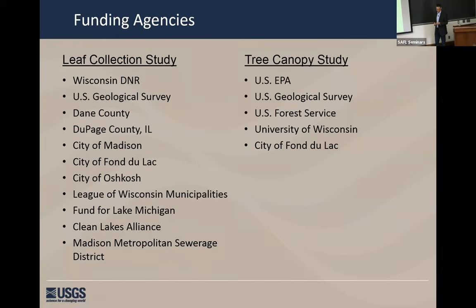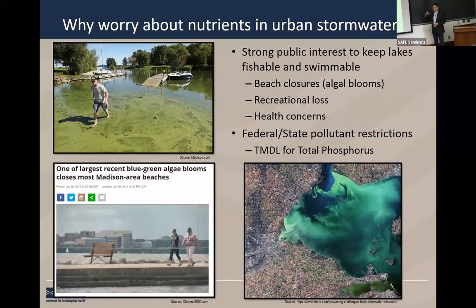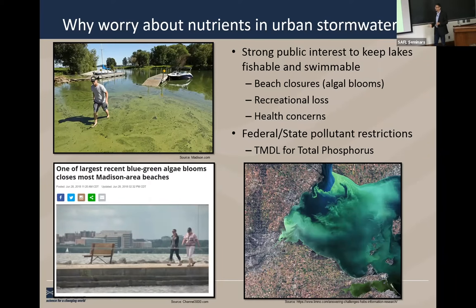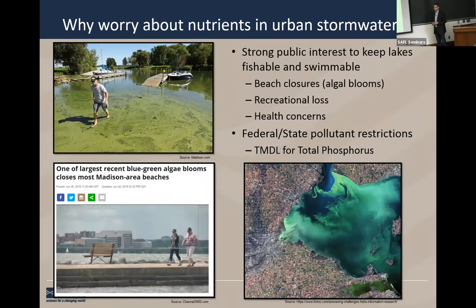Everybody here is very well aware of why we're concerned about phosphorus, but a lot of people I talk to aren't. Why do we care about nutrients? That bottom left photo was from last year around this time — we already had a large cyanobacteria algal bloom. Just this past week, we had another one in Madison. This is a reoccurring theme, and people are starting to gain attention and awareness that phosphorus is a big player. We're all familiar with the harmful algal bloom in Lake Erie, so it's a big issue. And as such, our policymakers are responding by coming up with pollutant restrictions and TMDLs.